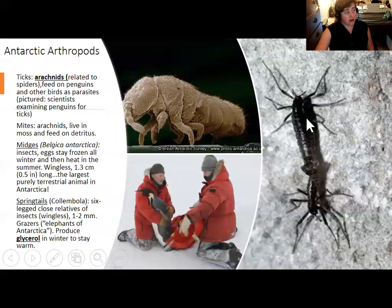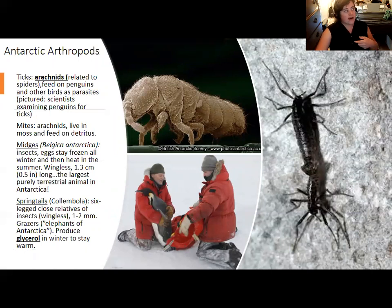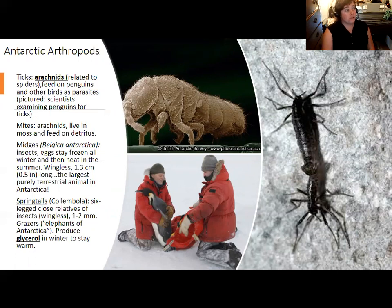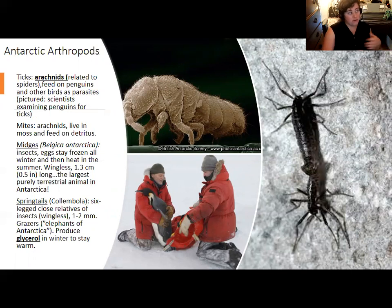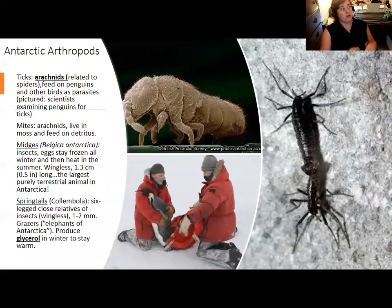Going farther south onto the mainland, most of the land animals are arthropods — insects, spiders, and arachnids, the group that includes spiders, mites, and their relatives. Arthropods also includes crustaceans, which is the group that includes crabs and lobsters — mostly marine animals, but you do have some land-based crustaceans like roly-polies, which are actually very closely related to crabs.